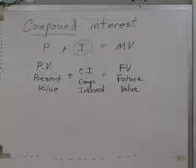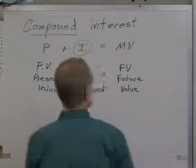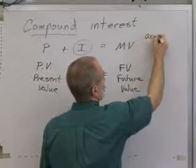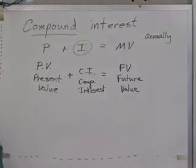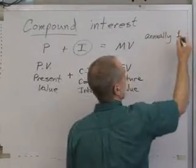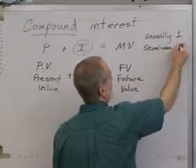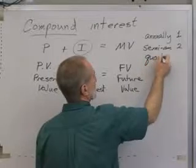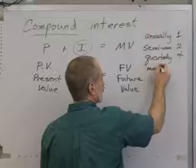It's very important to know how often something is compounded. There's a list of terms there in the chapter. If something is compounded annually, how many times a year is that? That's once a year. If it's semi-annually, how many times is that? That's twice a year. If it's quarterly, how many times a year? Four. If it's monthly, how many times a year? Twelve.